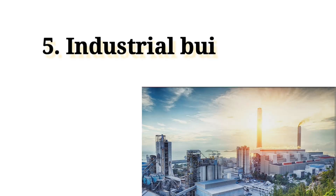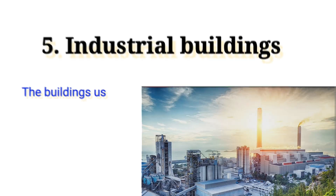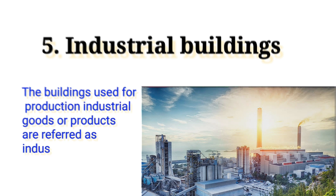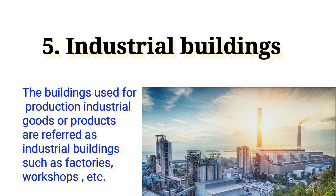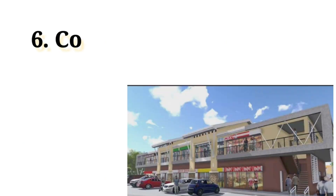5. Industrial buildings. The buildings used for the production of industrial goods or products are referred to as industrial buildings, such as factories, workshops, etc.